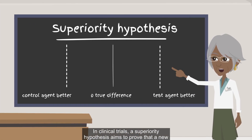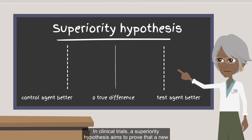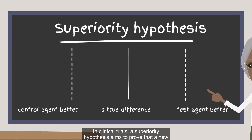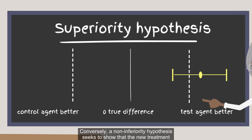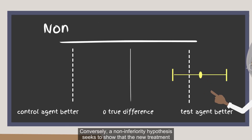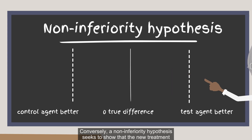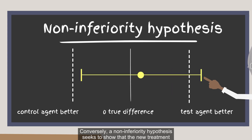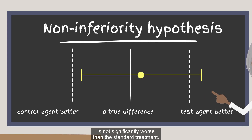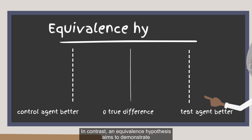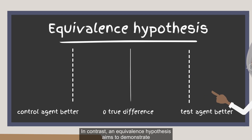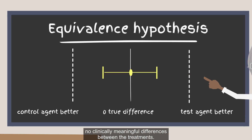In clinical trials, a superiority hypothesis aims to prove that a new treatment is better than an existing one. Conversely, a non-inferiority hypothesis seeks to show that the new treatment is not significantly worse than the standard treatment. In contrast, an equivalence hypothesis aims to demonstrate no clinically meaningful differences between the treatments.